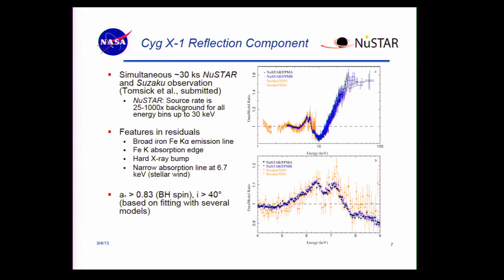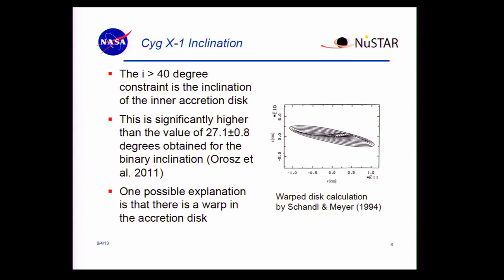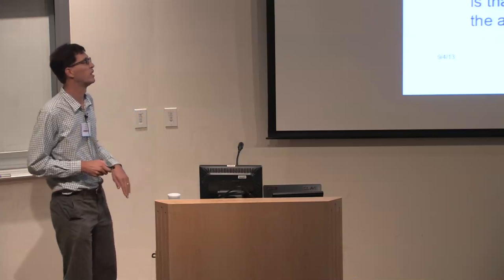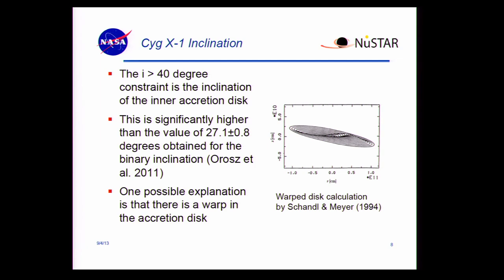When we model this, we constrain the black hole spin to be greater than 0.83, where 0 is a non-rotating black hole and 1 is a maximally rotating black hole. We also constrain the inclination to be greater than 40 degrees. There's been a recent measurement of the binary inclination that says it's 27.1 degrees with very small error bars — significantly different from our constraint. One possibility is we're actually seeing a misalignment between the orbital plane and the disk plane, and there could be a warp in the disk. This has been calculated before and MHD simulations show it can happen, so it'd be interesting to have a real system where you can confirm a warped disk.